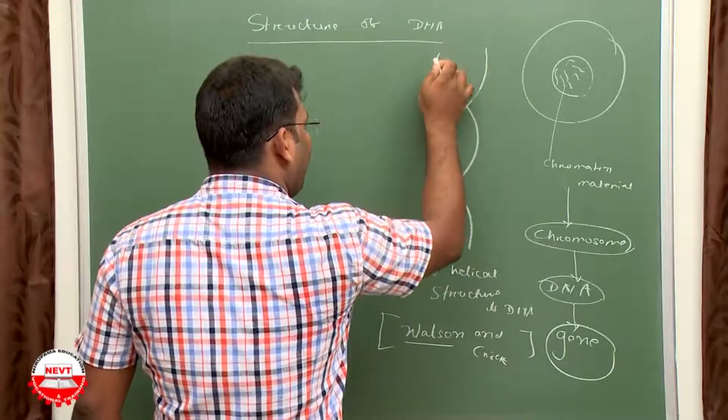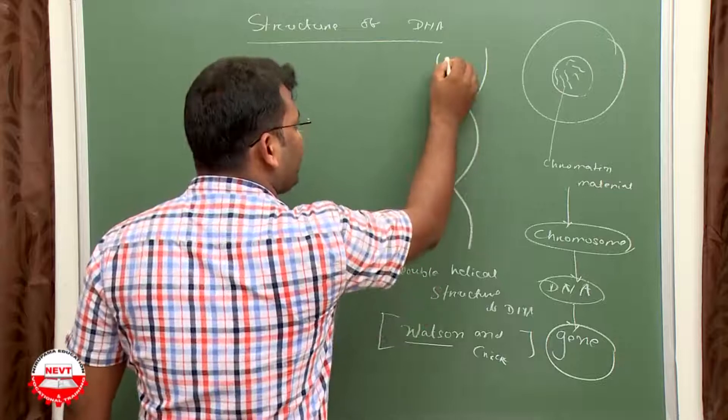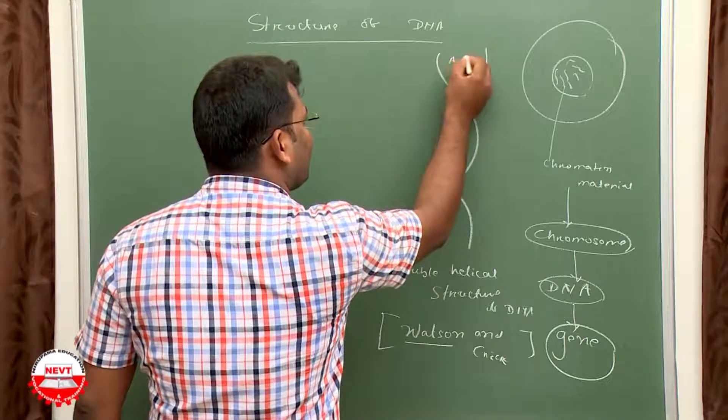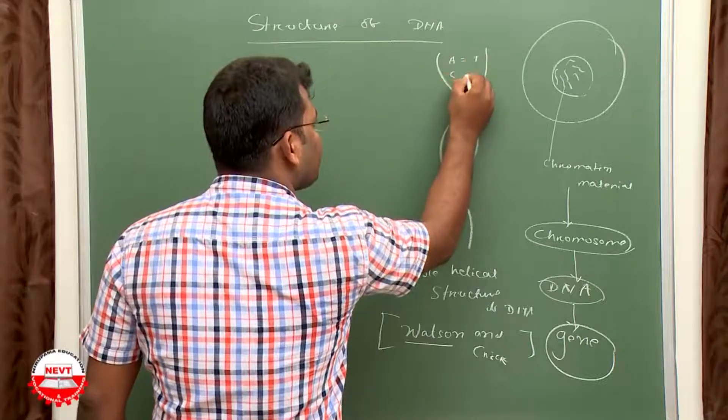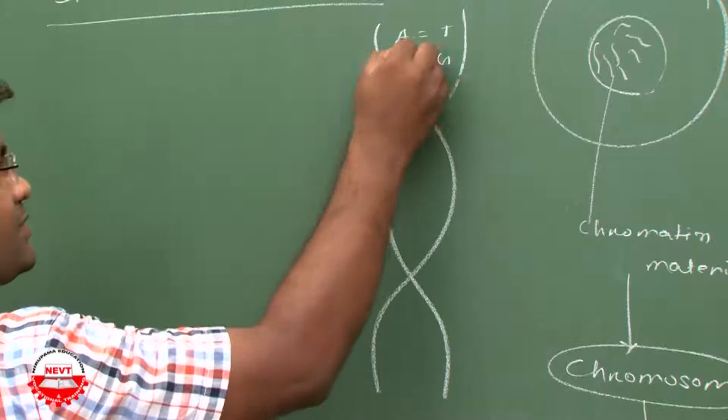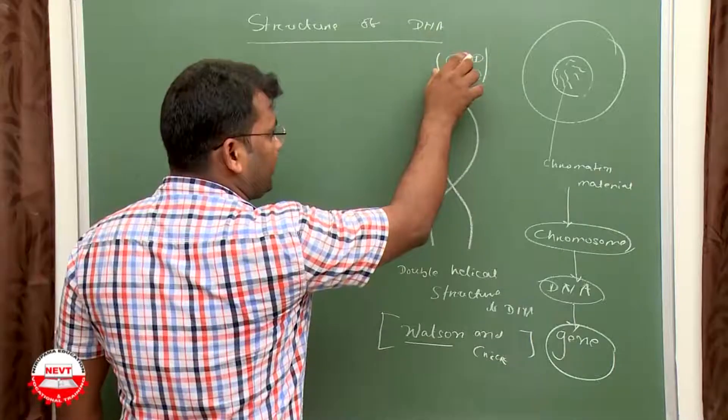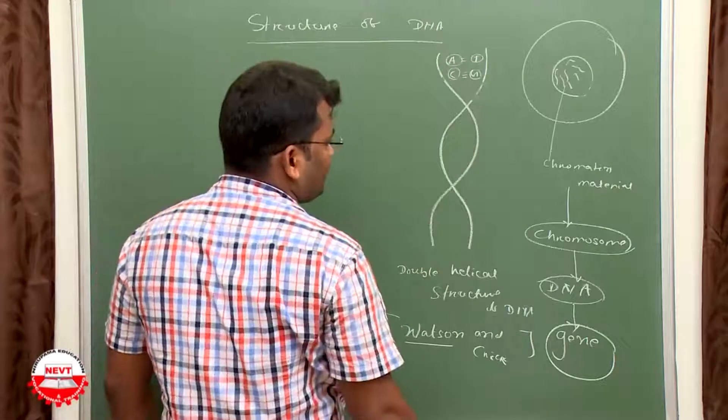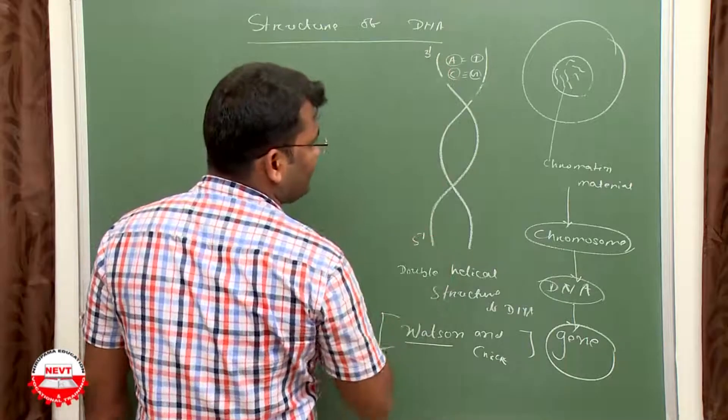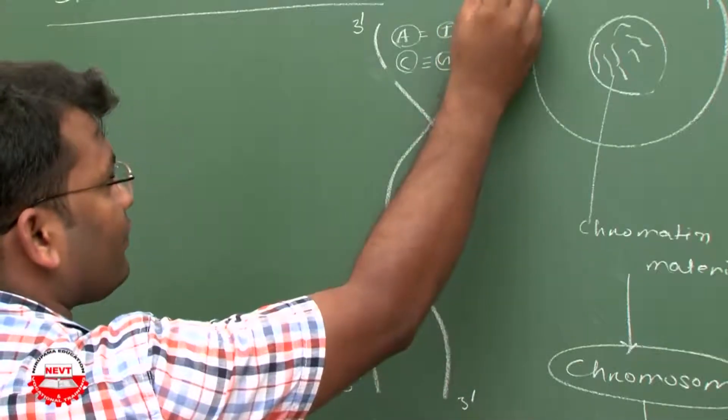DNA has two strands. In between, the linkage is formed by nitrogen bases like adenine, thymine, cytosine, and guanine. These nitrogen base pairs link between the two strands. The strands are aligned in 3' to 5' and 5' to 3' directions.